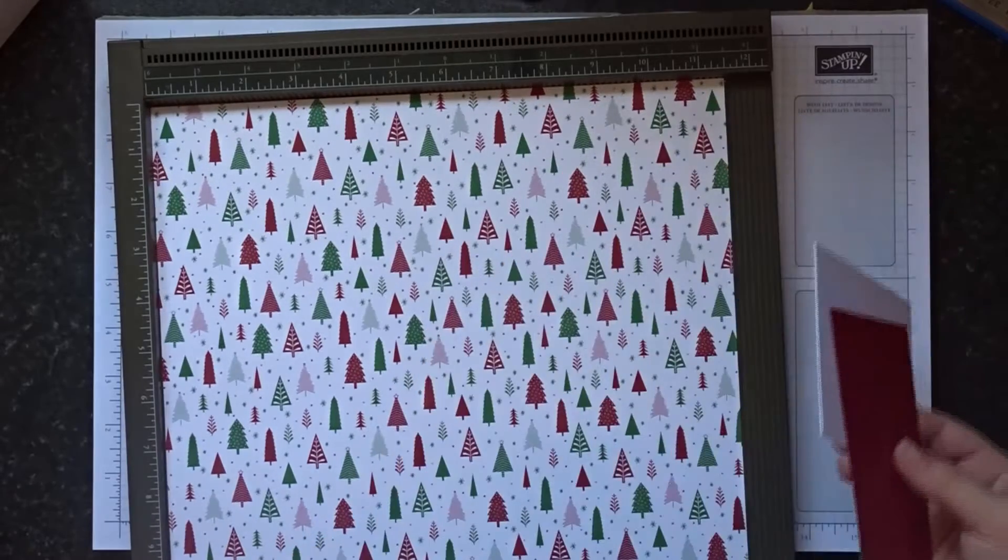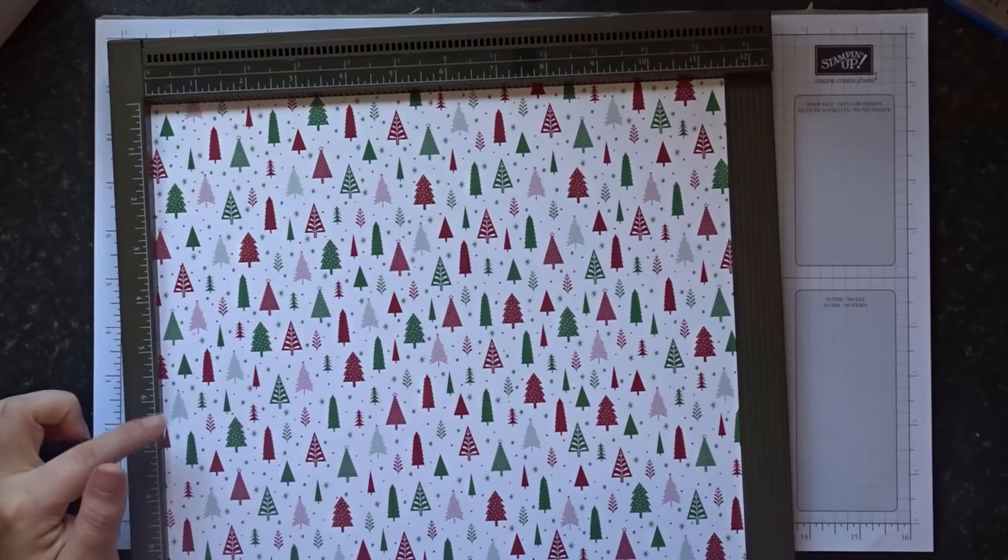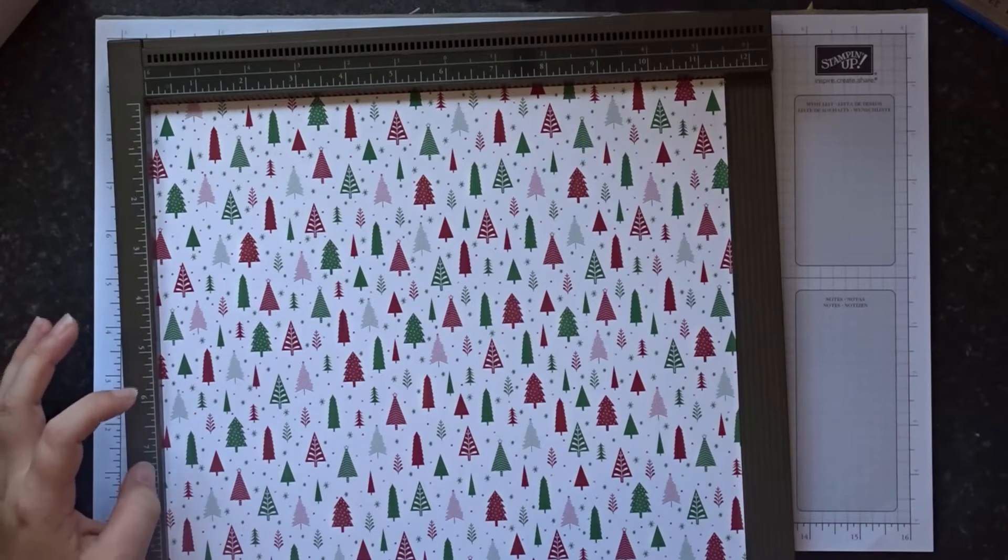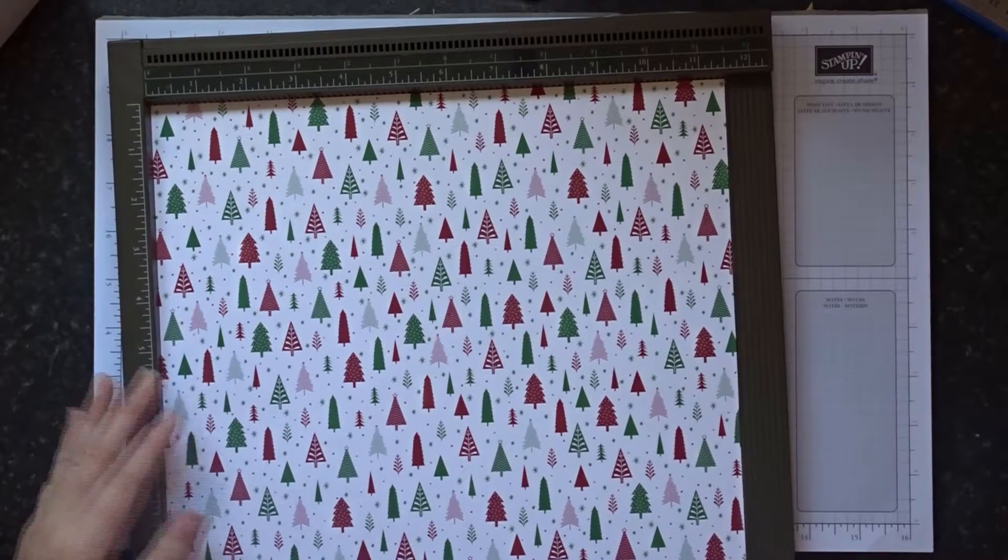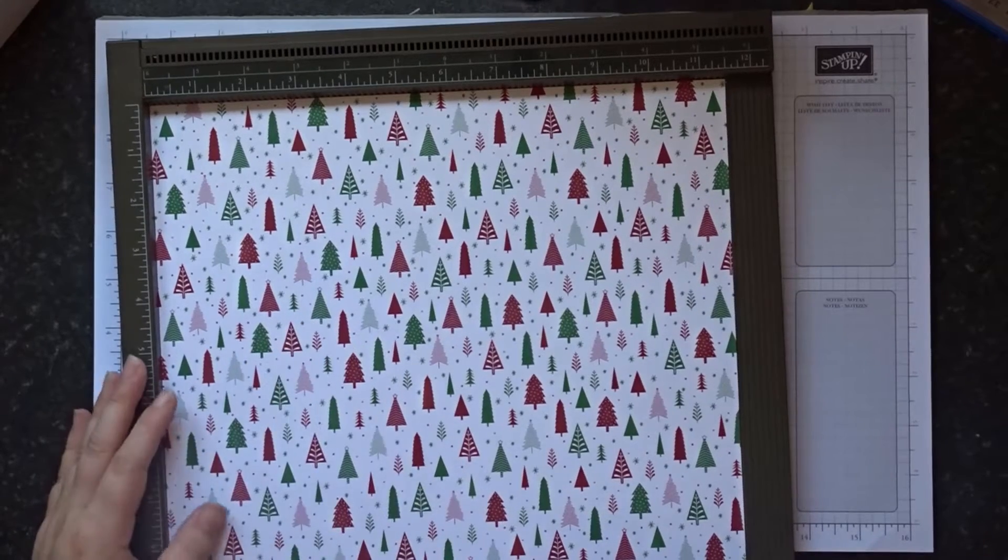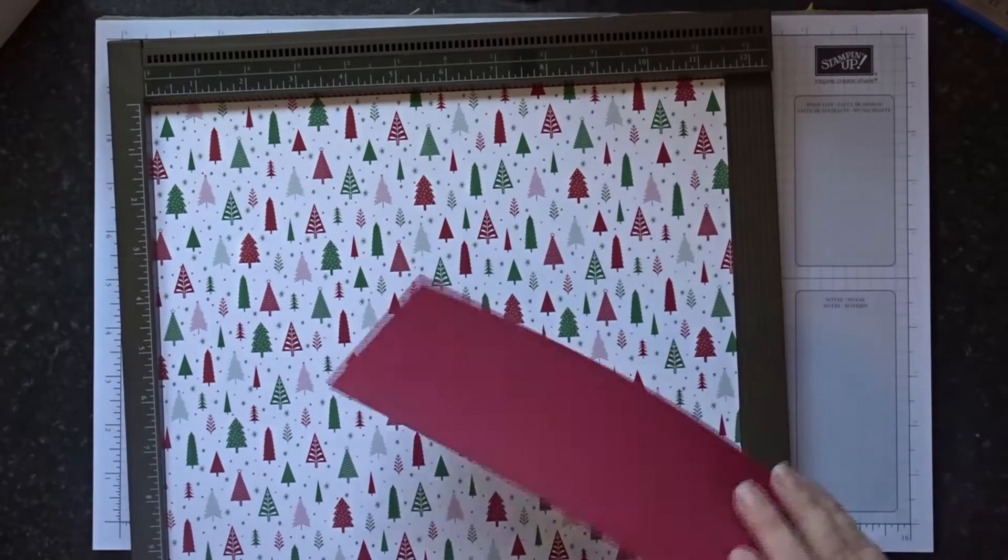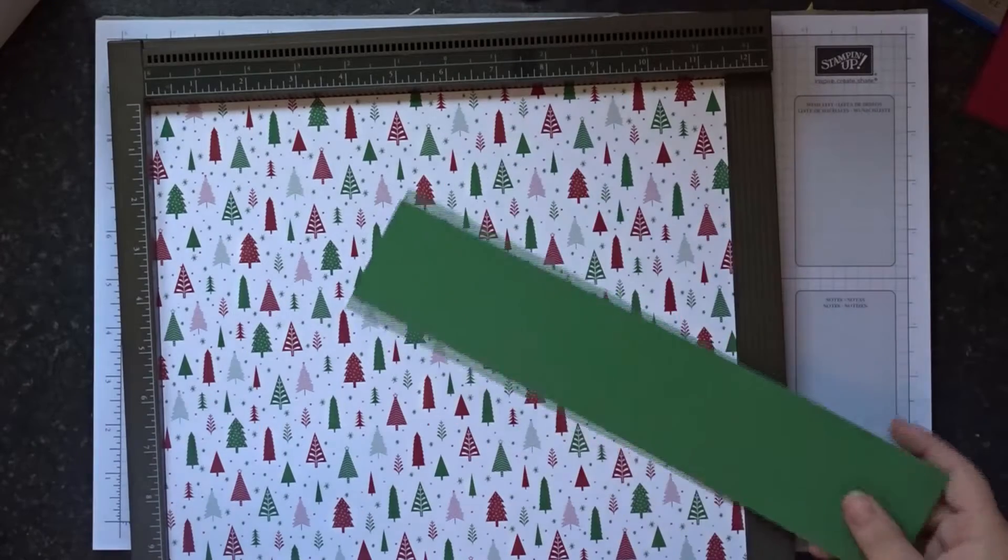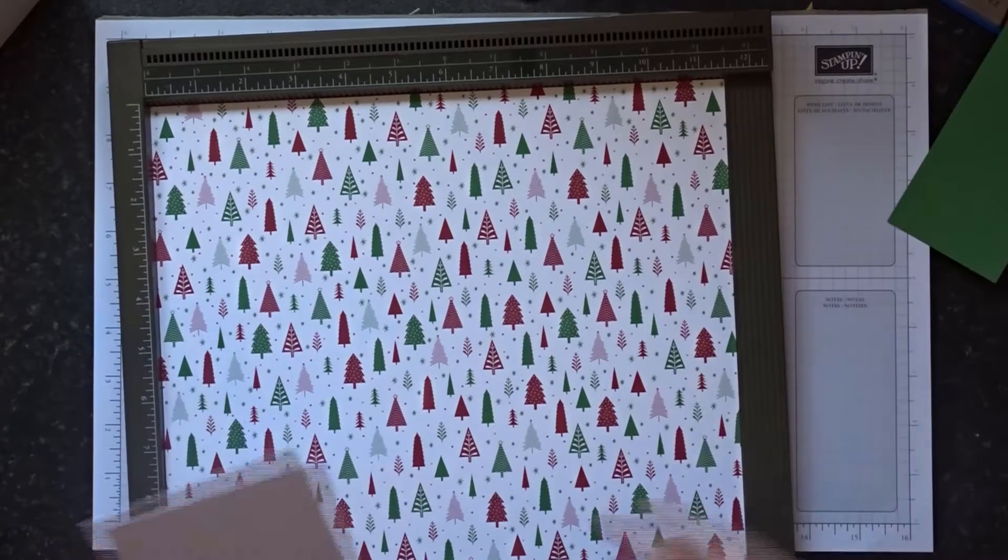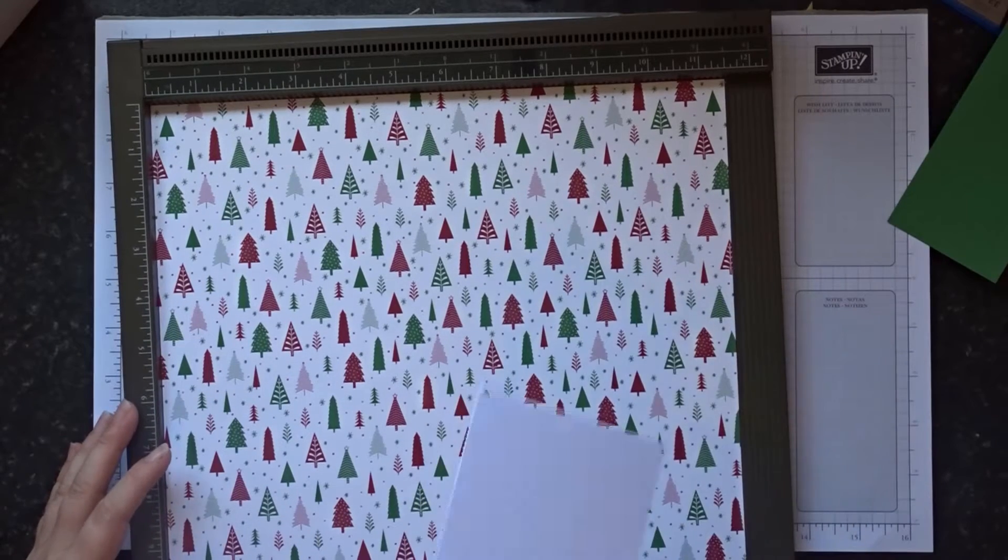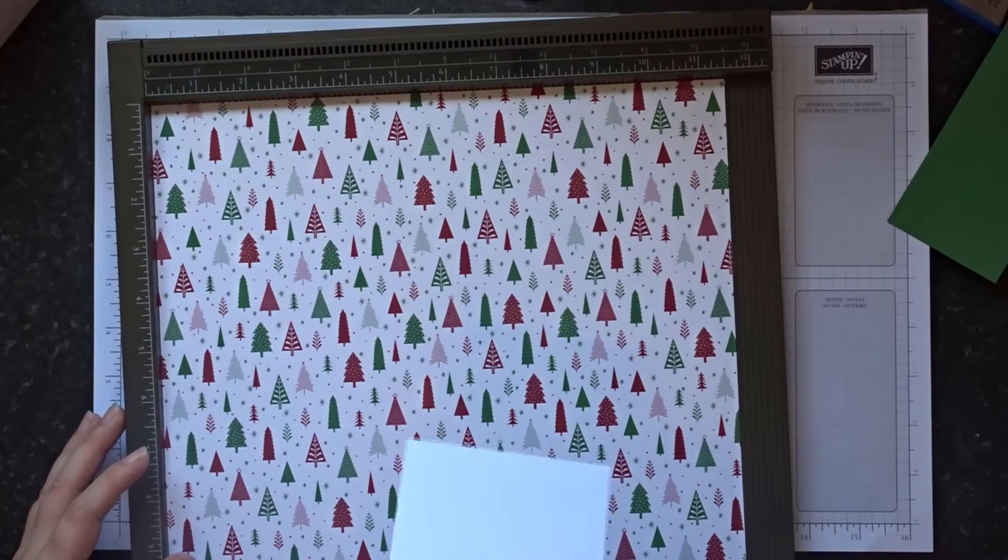So your piece of DSP needs to be 11 and a half by 12 inches. If you're doing a pattern like I am here, the short side needs to be the correct way up, so the 11 and a half needs to be the way of the flow of the pattern. You're then going to need a scrap bit of cherry cobbler for punching our flowers, a piece of garden green that is two inches, and a piece of whisper white or scrap cardstock that is 3 and 11 sixteenths by 3 and 11 sixteenths.